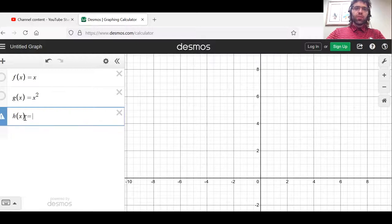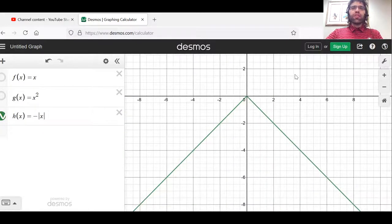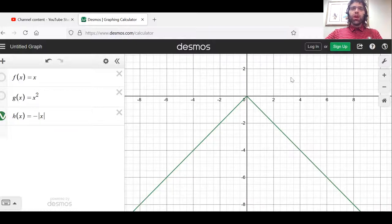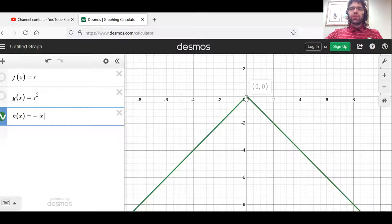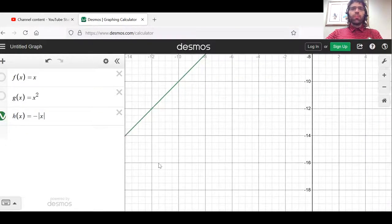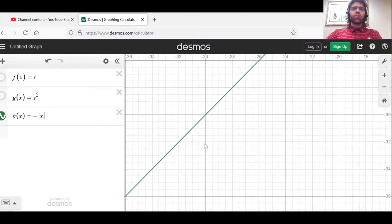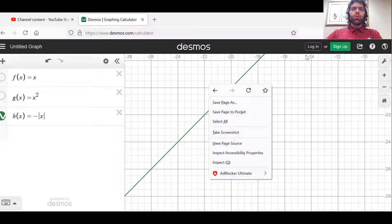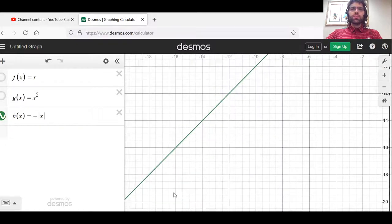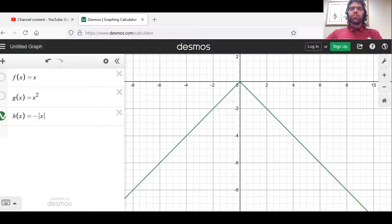H of x equals negative the absolute value of x is the opposite. It has a maximum value here, but no minimum value. It just keeps getting smaller and smaller. So that's the first important observation.